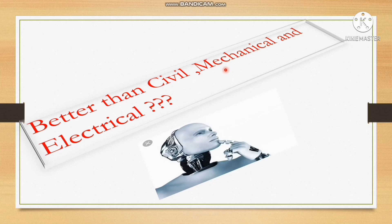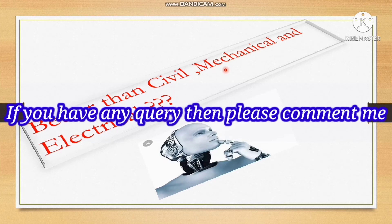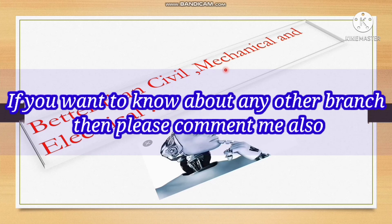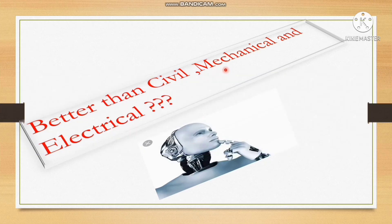If you have interest in robotics, coding, instrumentation, or electrical instrumentation, then EIE branch is for you. If you want to know about ECE branch or computer science branch, please comment and I will make a separate video. Regarding placement: go for EIE branch. If you want to pursue M.Tech, you can choose civil, mechanical, or electrical. If you want a good job package early after B.Tech, choose EIE.